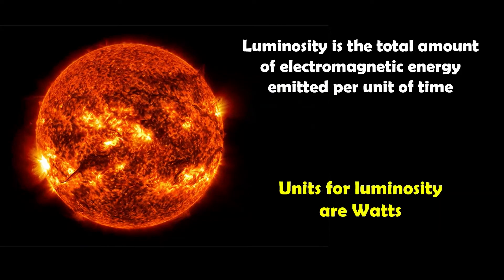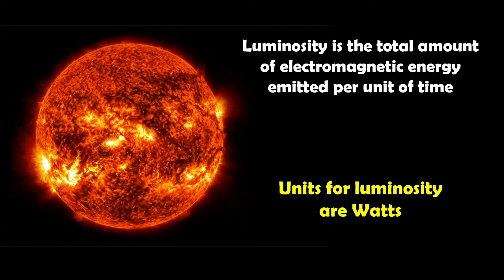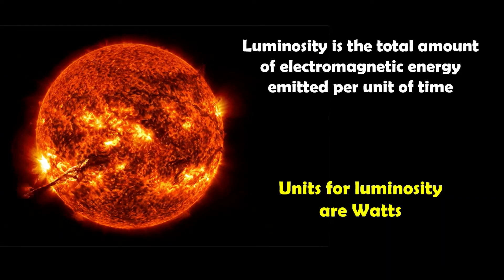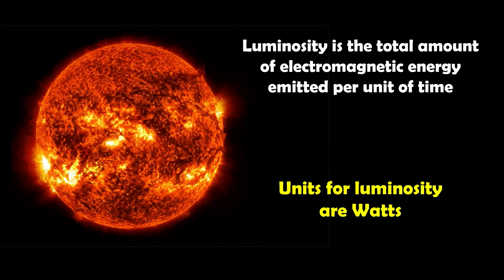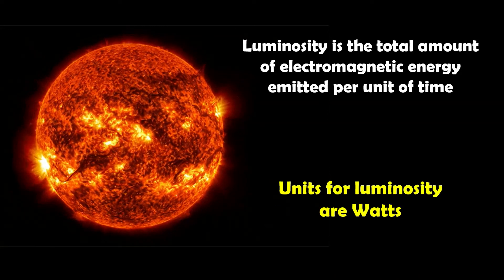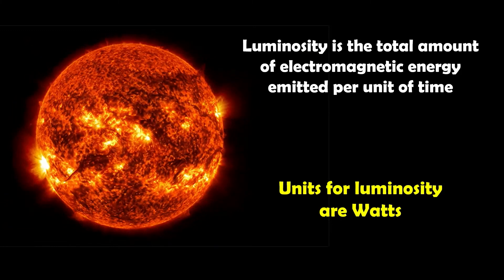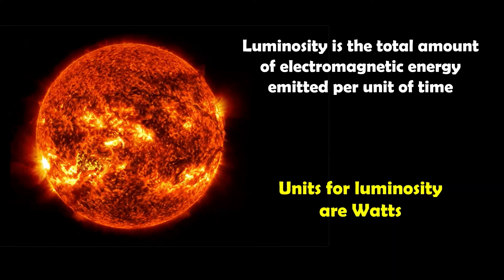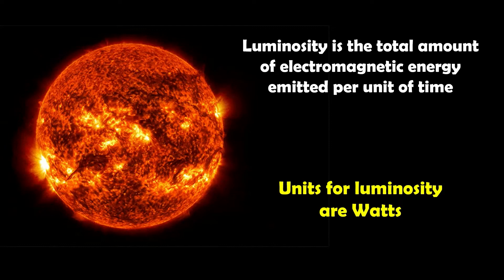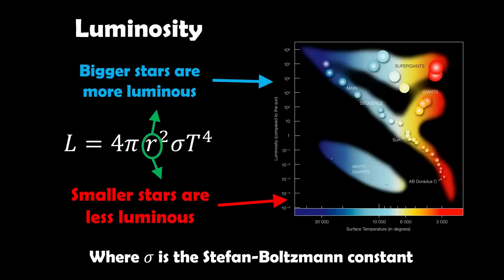Luminosity, to put into context what that is for a star, is the total amount of electromagnetic energy emitted per unit time. It means the amount of energy that the star is emitting, and the units are generally given in watts. We can also convert that to absolute magnitude, which is how bright the star is.